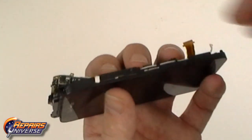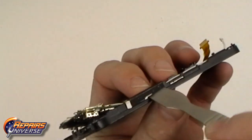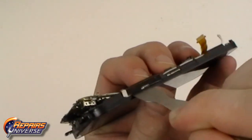We can now use a pry tool to release the volume button flex cable from the housing. This will simply be adhered into place.